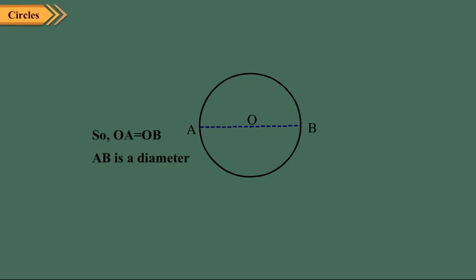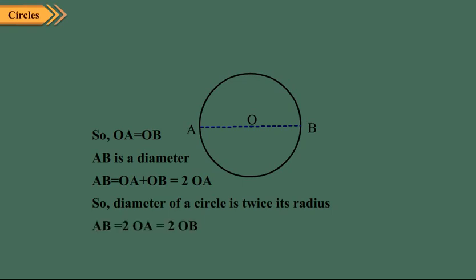Also, line segment AB is a diameter. So, line segment AB is equal to line segments OA plus OB, which is equal to 2 OA. So, diameter of a circle is twice its radius.